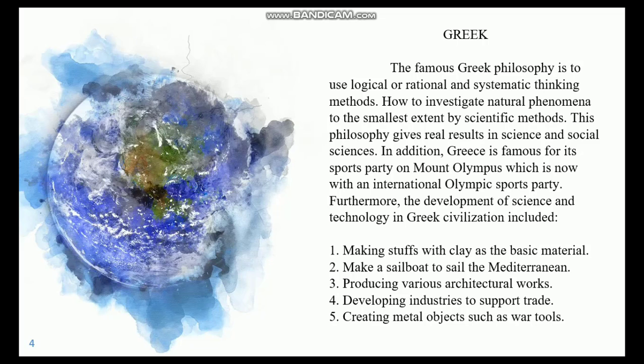Furthermore, the development of science and technology in Greek civilization included: 1. Making items with clay as the basic material. 2. Making sailboats to sail the Mediterranean. 3. Producing various architectural works. 4. Developing industries to support trade. 5. Creating metal objects such as war tools.